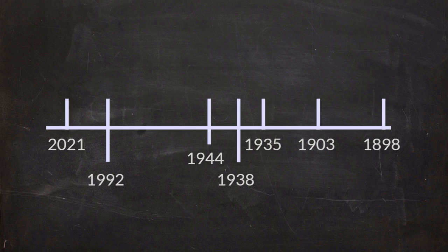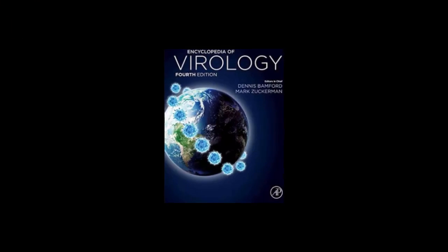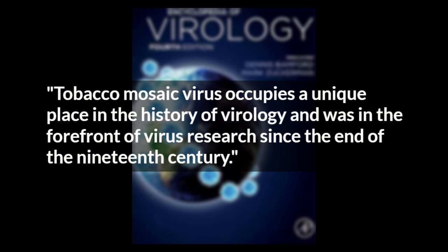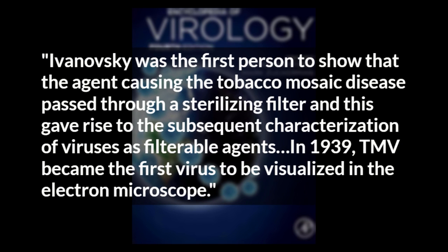The 2021 Encyclopedia of Virology has a section about tobacco mosaic virus and the beginnings of virology. It opens with: 'Tobacco mosaic virus occupies a unique place in the history of virology, and was in the forefront of virus research since the end of the 19th century.' It goes on to state that Ivanovsky was the first person to show that the agent causing the tobacco mosaic disease passed through a sterilizing filter, and this gave rise to the subsequent characterization of viruses as filterable agents.